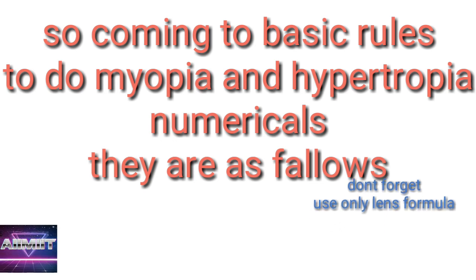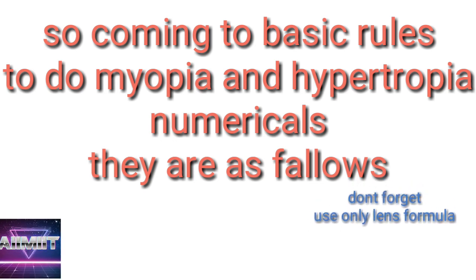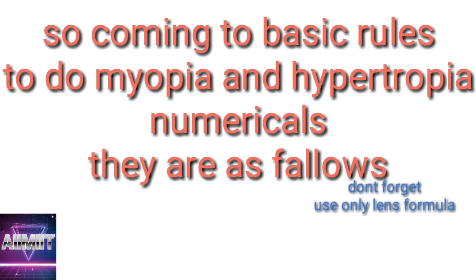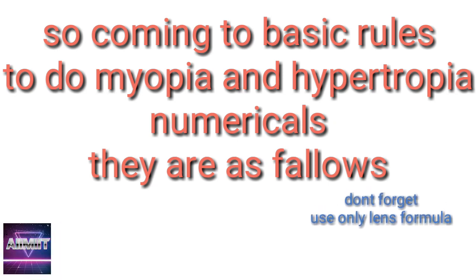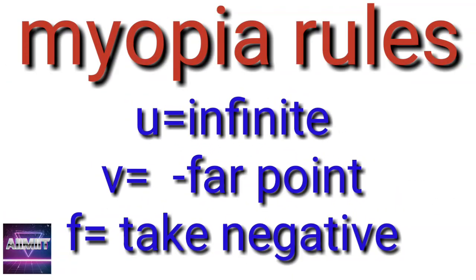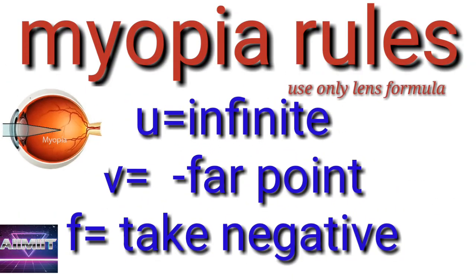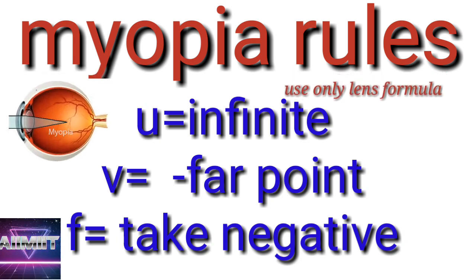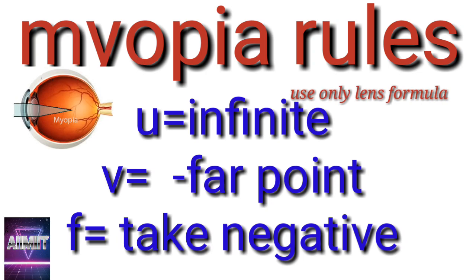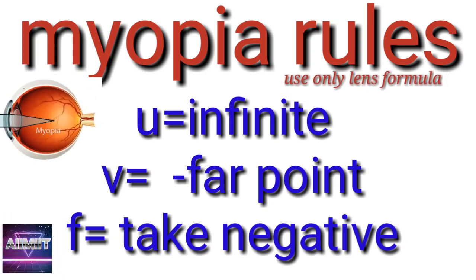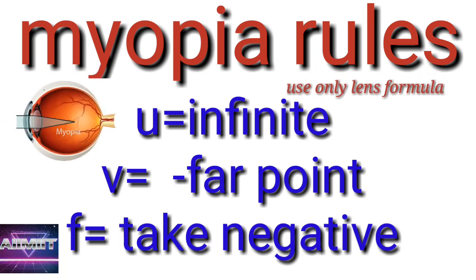So, I want to discuss some of the basic rules for myopia and hypermetropia here. Remember, always for myopia and hypermetropia, use lens formula only. Mirrors formula we won't use because the specs which we use for myopia and hypermetropia, we use lenses. We don't use mirrors. So, lens formula only we should use. And lens formula is 1 by F is equal to 1 by V minus 1 by U.